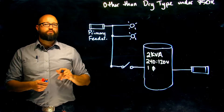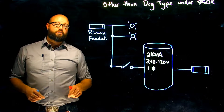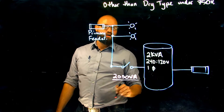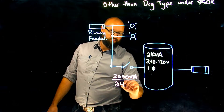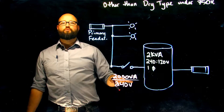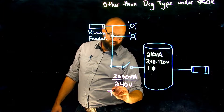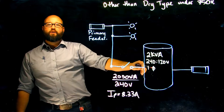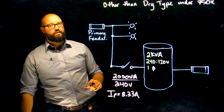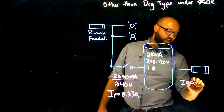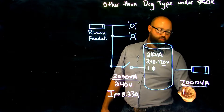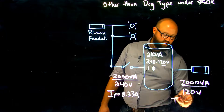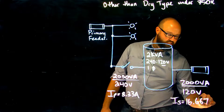As always, we need to figure out our rated primary current and our rated secondary current. We have our 2000 VA transformer divided by the primary line voltage of 240 volts. This is a single-phase transformer so I do not need to use root 3 as a multiplier, and I end up with a primary current of 8.33 amps. For the secondary, same 2000 VA divided by 120 volts gives us a secondary current of 16.667 amps.